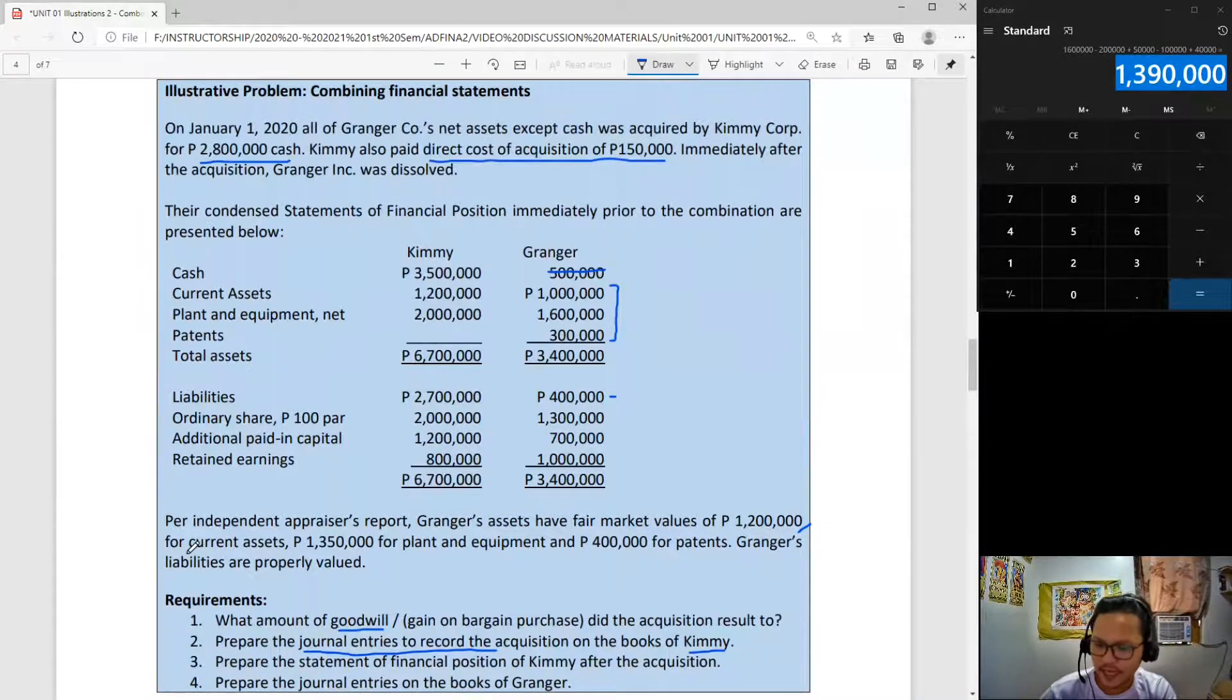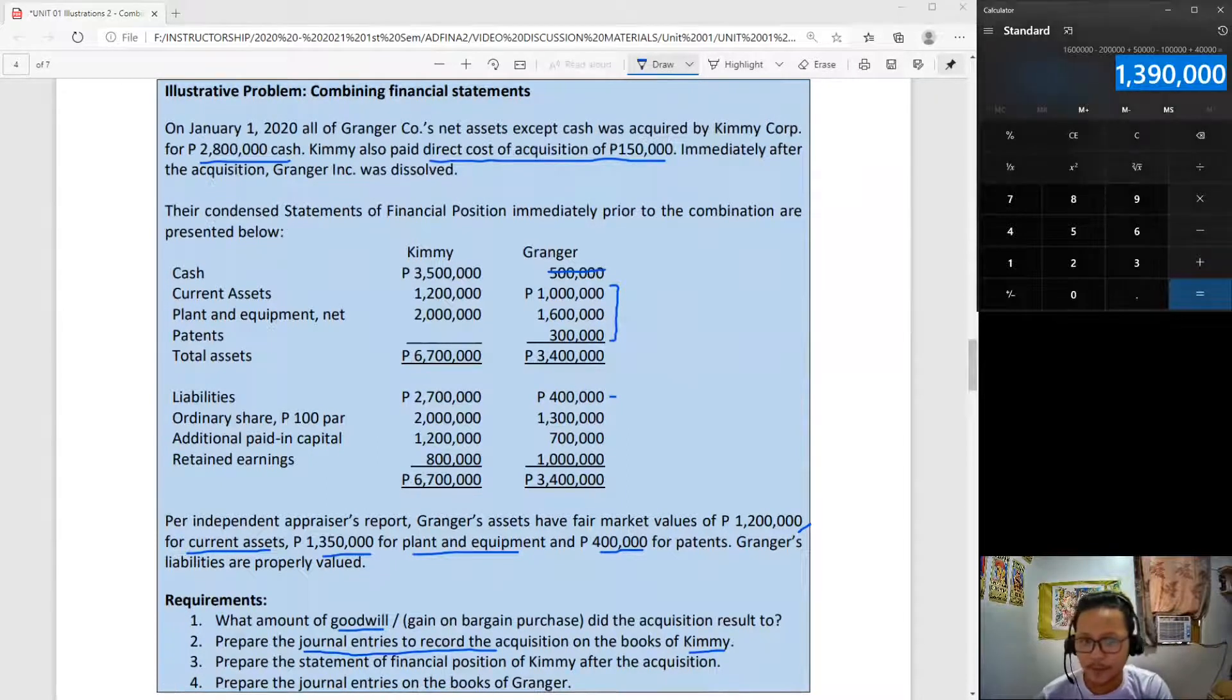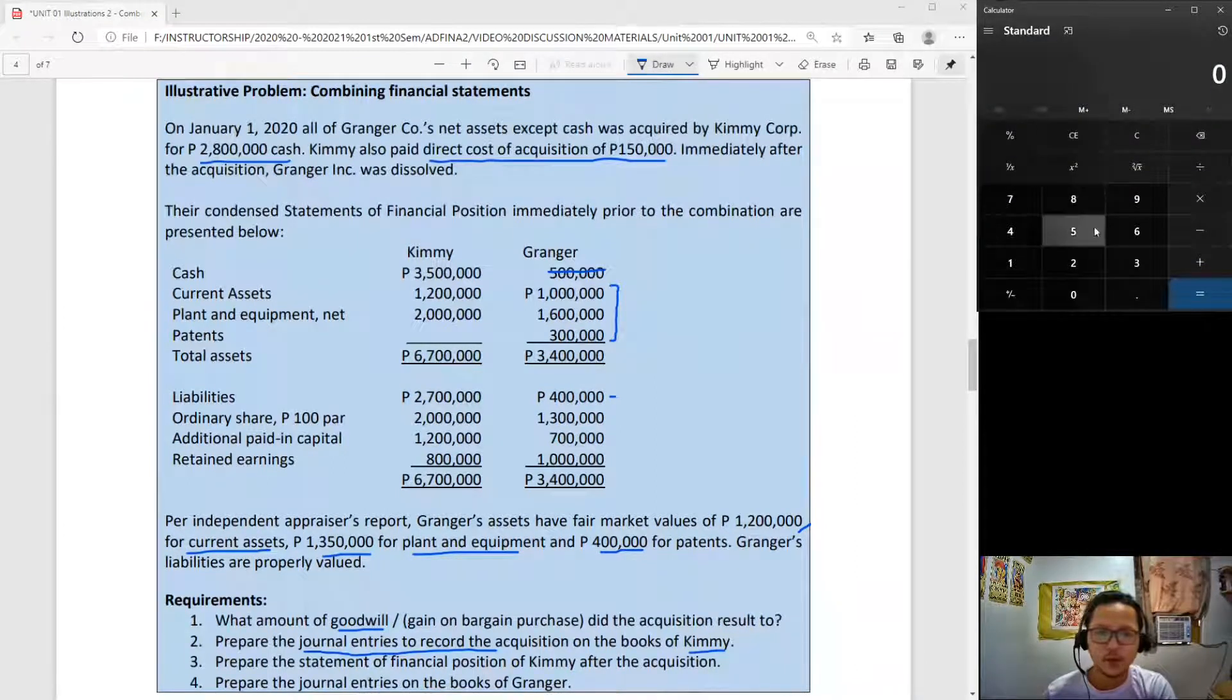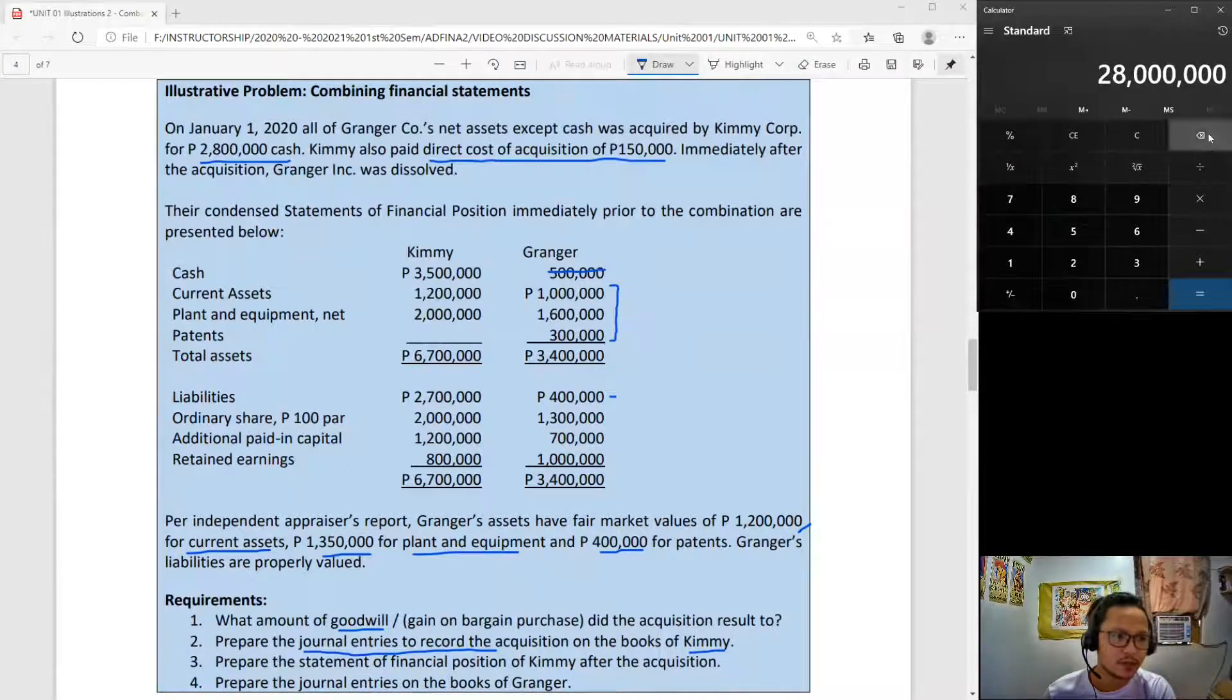Per independent appraiser's report, Granger's assets have fair market value of 1,200,000 for current assets, 1,350,000 for plant and equipment, and 400,000 for patents. These three are not equal to their book values because the fair values are given below. Granger's liabilities are properly valued, so at least we got that out of the way.